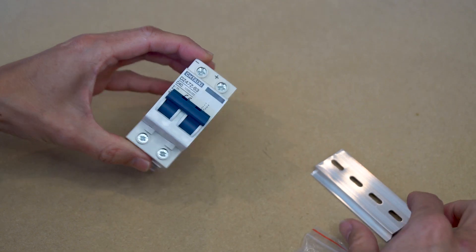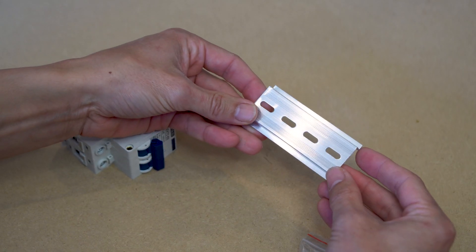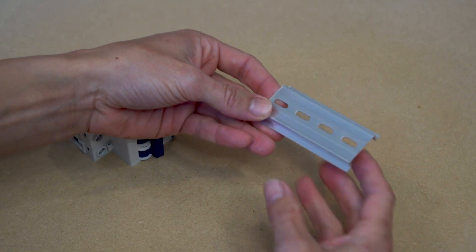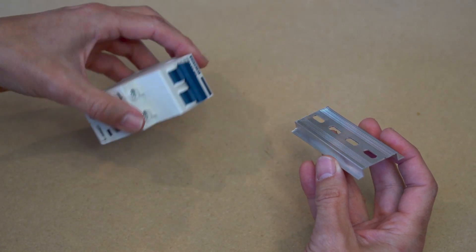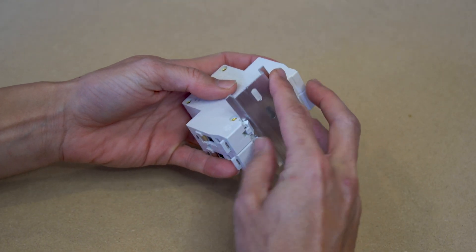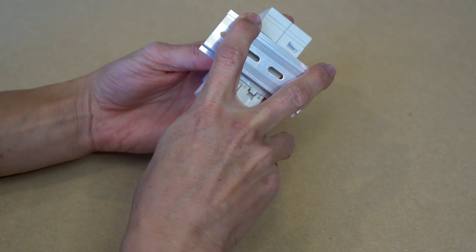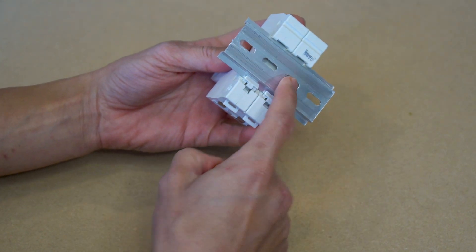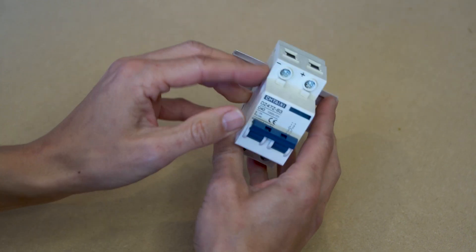To install this breaker you'll want to mount the DIN rail to the wall with these two screws. Once it's installed you want to insert the bottom part of this fuse to the DIN rail and then push down to install the DIN rail to the fuse. Pretty easy.